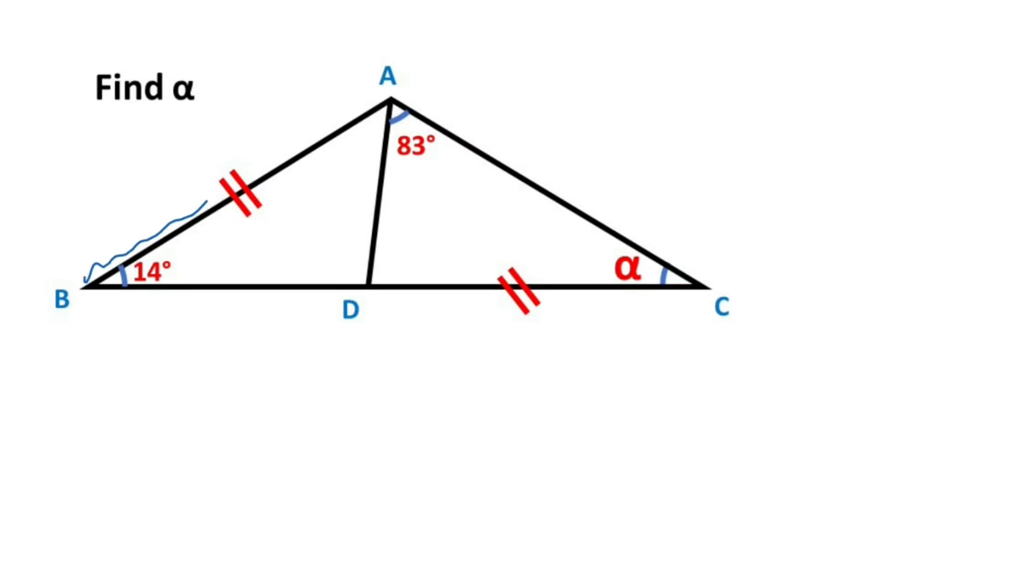Hello everyone, we have one triangle and these two sides are equal. Here this angle is 14 degrees and this angle is 83 degrees, and alpha is asked.